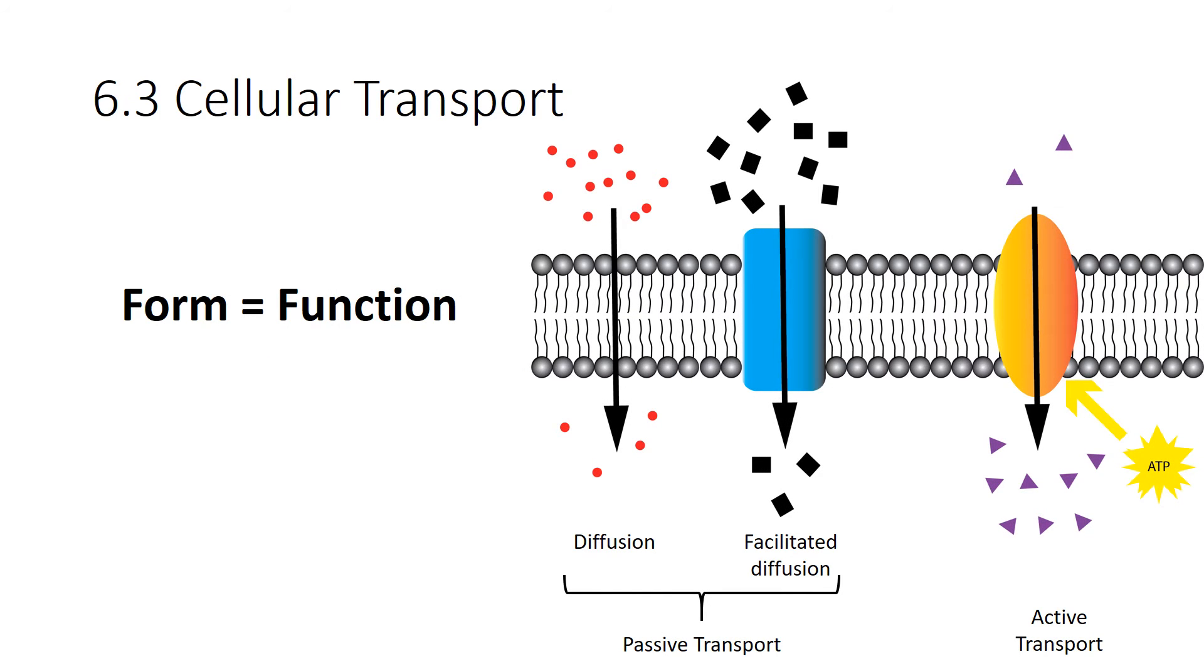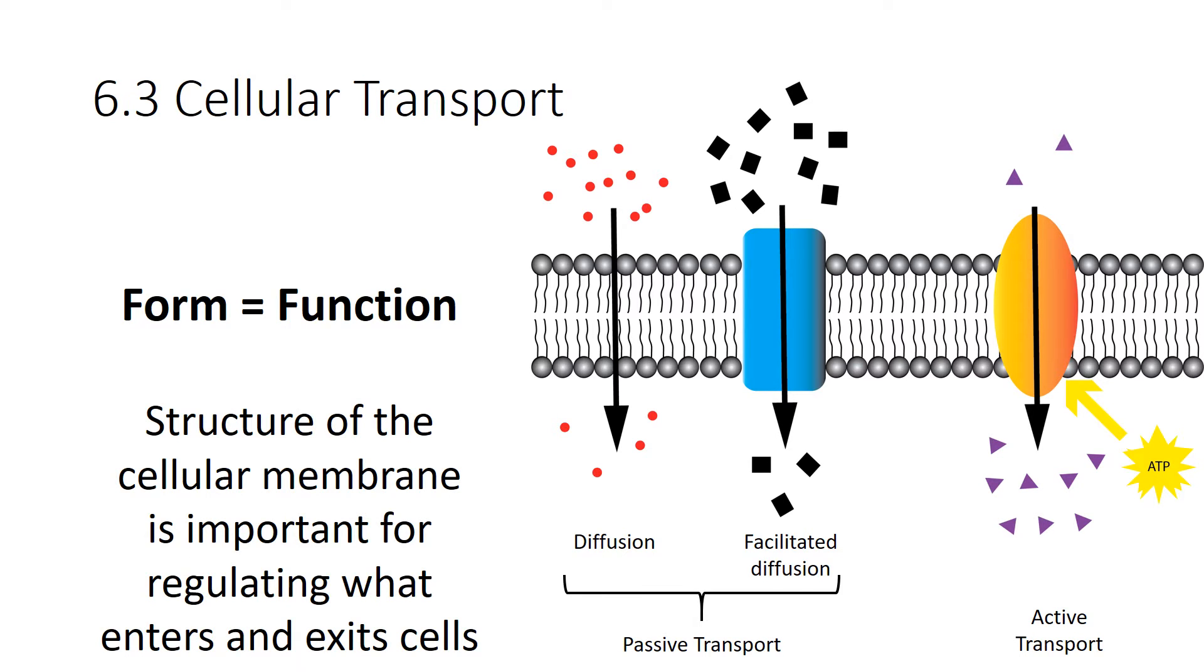To understand cellular transport, always remember form equals function. The structure of the cellular membrane is important for regulating what enters or exits the cell. Don't forget, those fatty acid tails that form a cellular membrane, they're hydrophobic, meaning the interior of the cell membrane is hydrophobic, so only certain things can pass through.